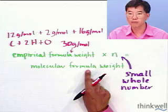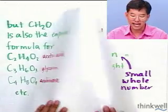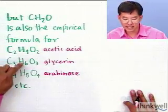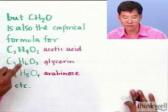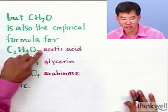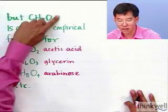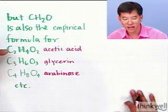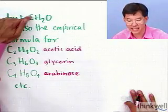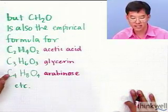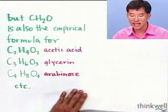The molecular formula weight is exactly how much a mole of each of these weighs. If you divide the mass of a mole of this stuff by the mass of a mole of that stuff, it tells you how these are related. This is exactly twice that, this is exactly three times that, this is exactly four times that.